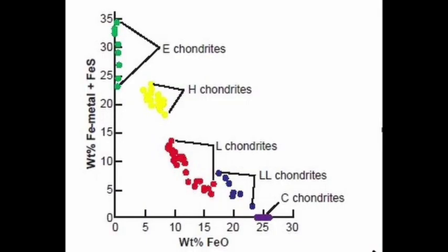Total iron content, on the other hand, refers to the total amount of iron present in the meteorite regardless of its form. This includes both metallic iron in the form of metal grains, as well as non-metallic iron-bearing minerals such as iron oxides and silicates. These minerals are typically much smaller and can be more difficult to identify and quantify than the larger metal grains.